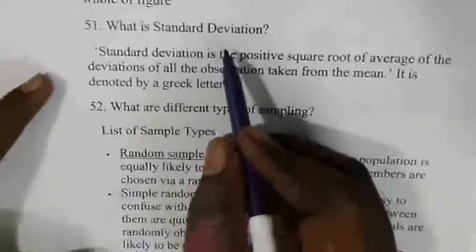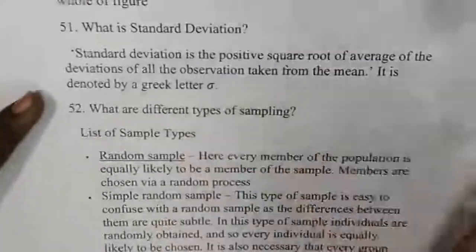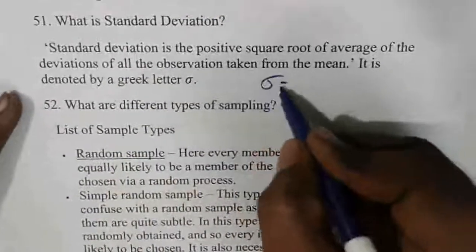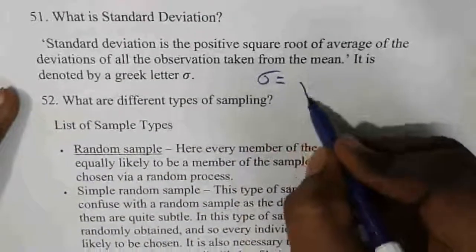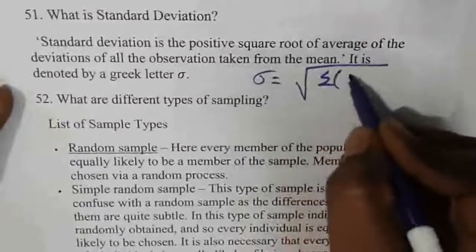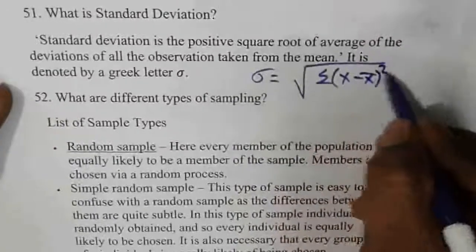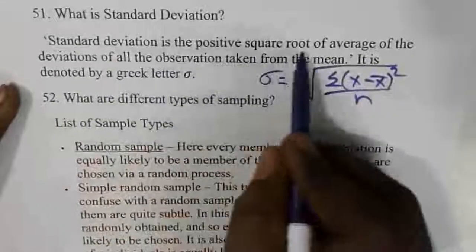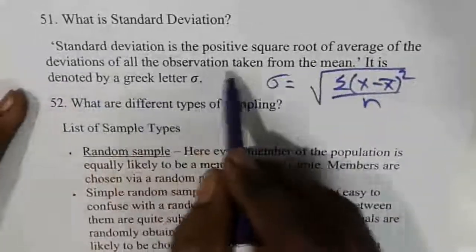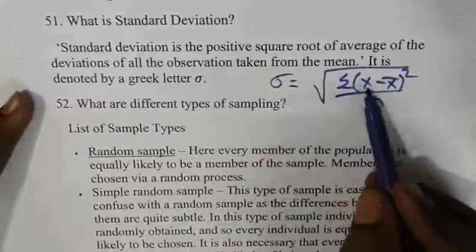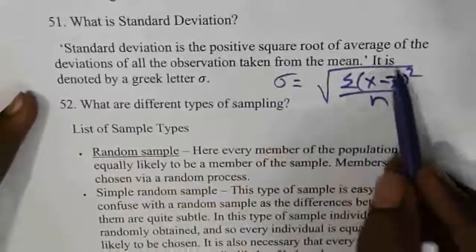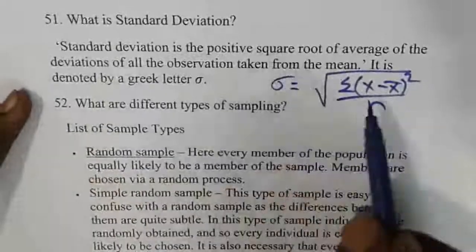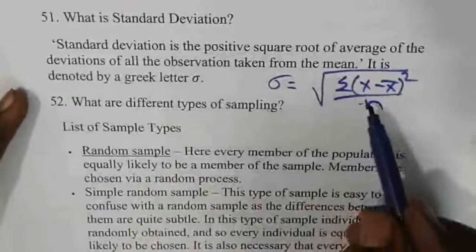Standard deviation is a very important concept. The formula is sigma equals the square root of summation of (X minus X-bar) squared divided by n. Standard deviation is the positive square root of the average of the squared deviations of all observations taken from the mean.